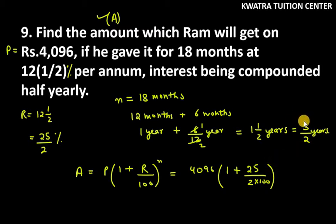N is 3 over 2 years and we have half year. When you have half year, you either change the formula or write it directly. I suggest you remember this formula where R is divided by 200 and 2n. So here it will be 200, and n which is 3 over 2, the 2s cancel, raised to 3.